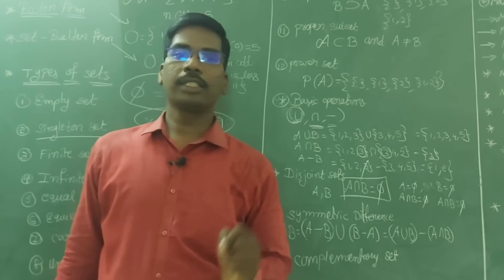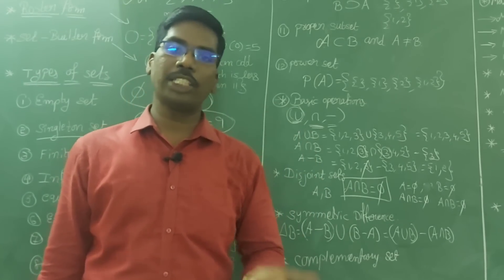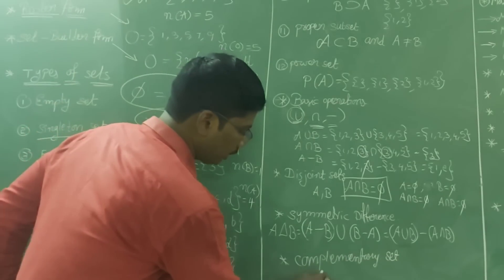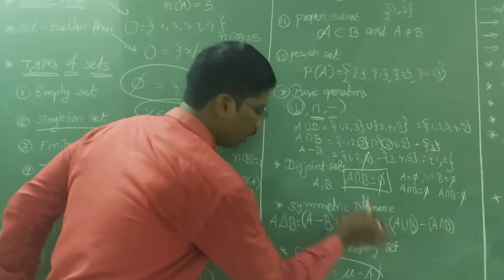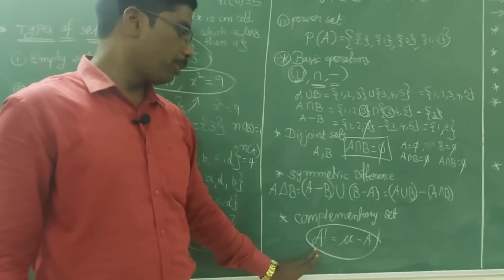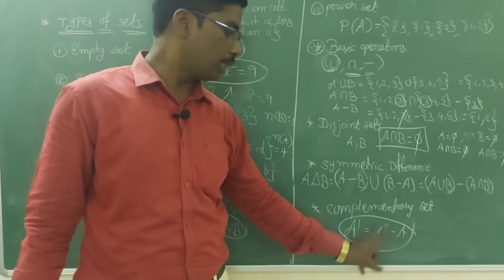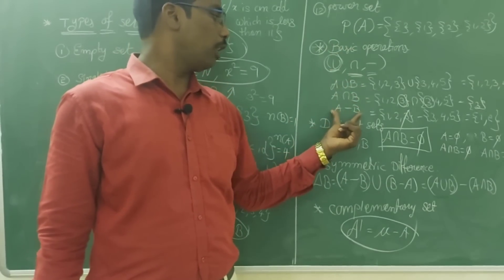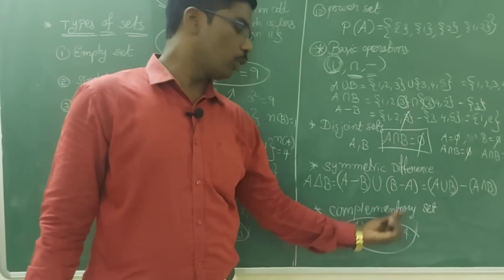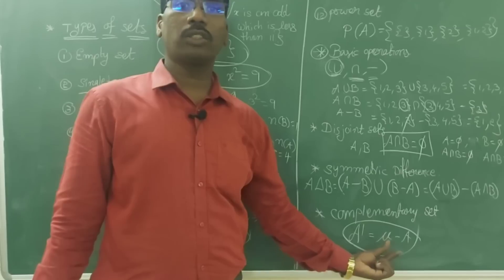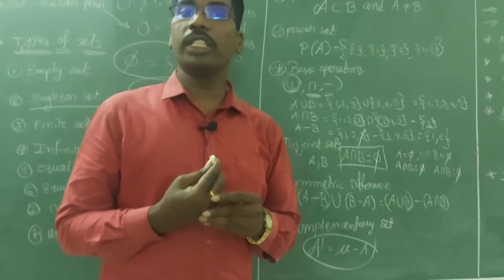Complementary set: the elements that are present in the universal set μ but not present in A — that is the complement of A, denoted A' (A dash). The element should be present in μ and should not be present in A — that is called the complement of A. This is similar to A − B but here it is μ − A.